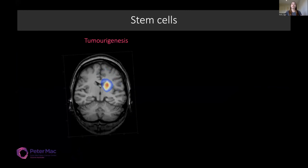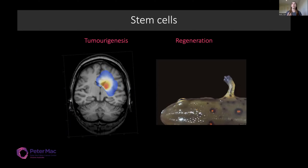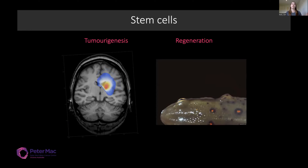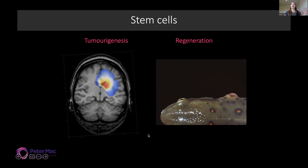Many brain cancers can arise from the over-proliferation of stem cells. These stem cell populations stop obeying different signals, start to mass proliferate, and that's how we can get tumour formation. Interestingly, the activation of proliferation also occurs in a similar way during regeneration — upon tissue loss or injury, regeneration is the activation of proliferation in a controlled manner that can restore the tissue loss. So even though these processes seem quite different, they're also very similar in many ways, and we can learn a lot about each from the other.